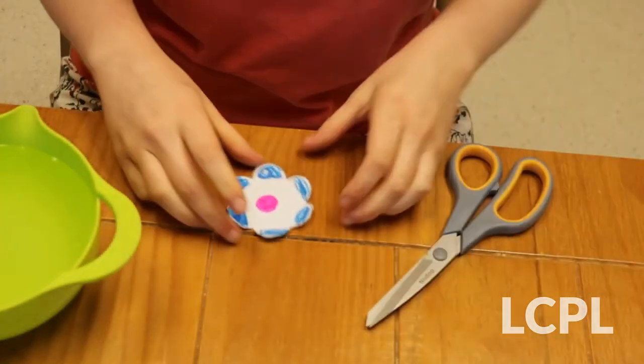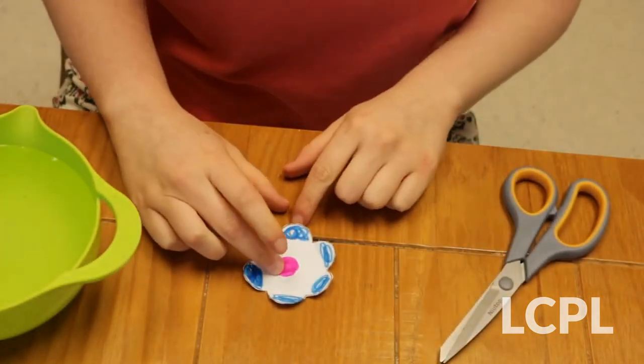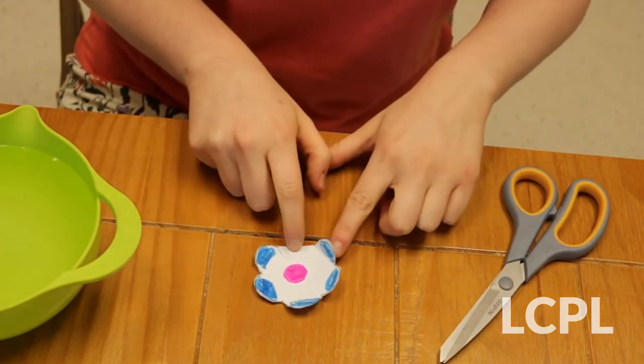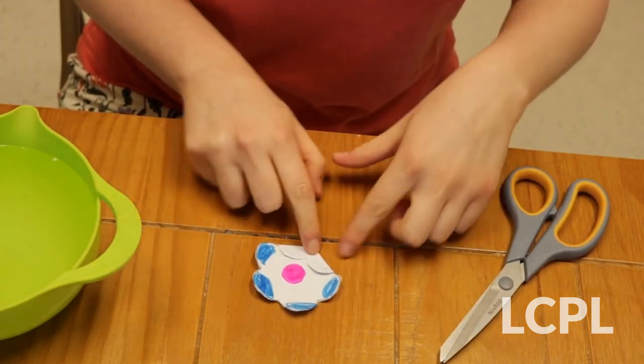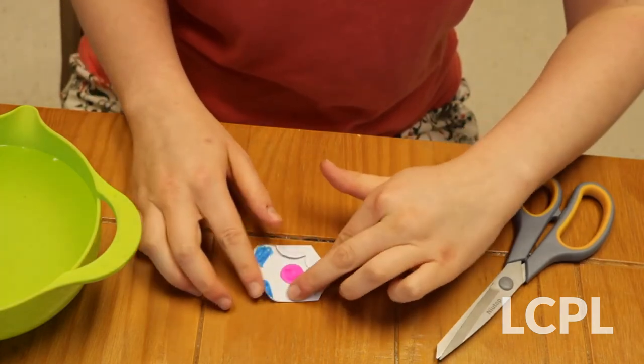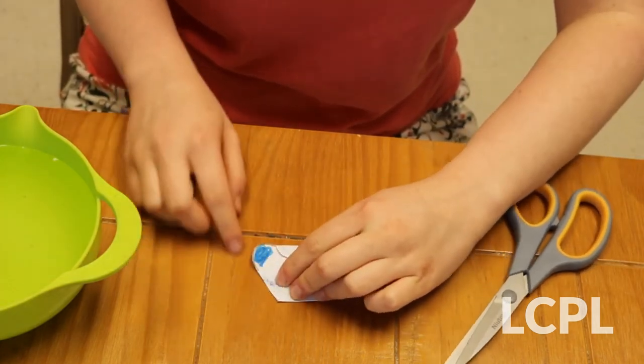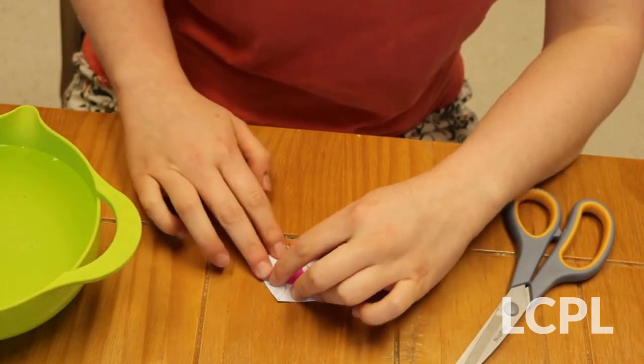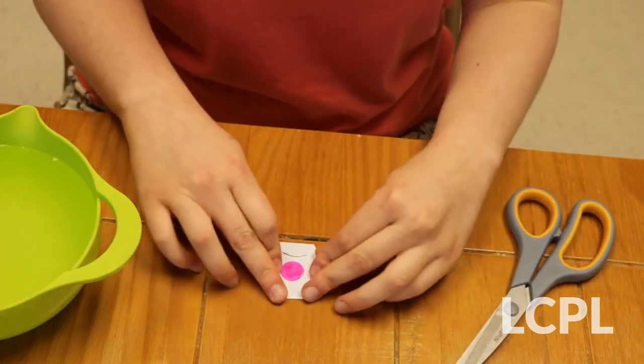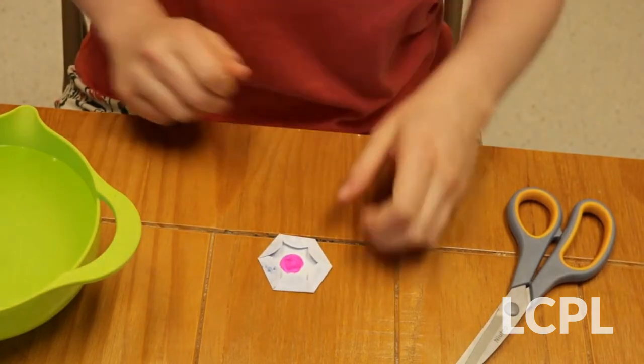So once you have your flower colored, what you're going to want to do is fold it up. So you'll take the petal and you'll fold it in toward the middle, and then just keep going around until all the petals are folded down. With some kinds of flowers the petals may overlap more. This one, it's not. All right, so now we have a flower that is all closed up.